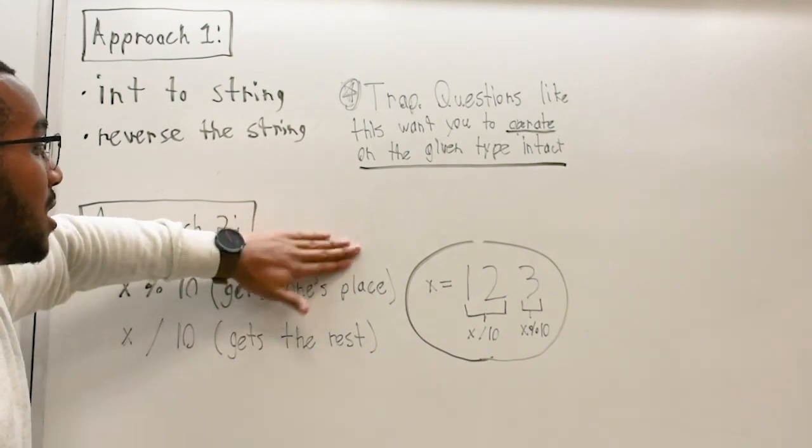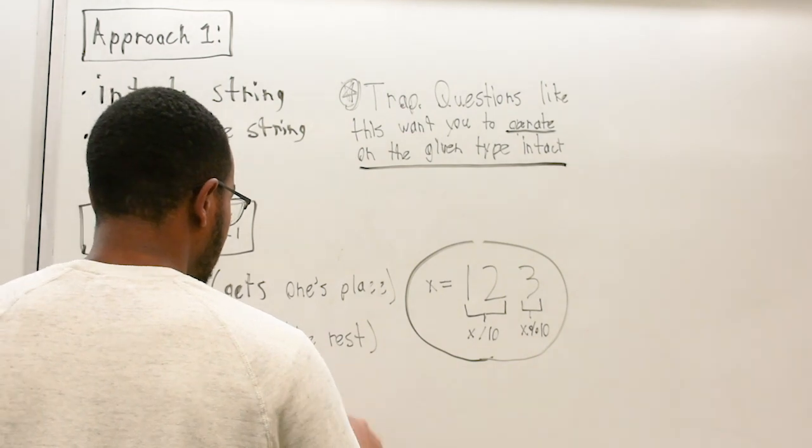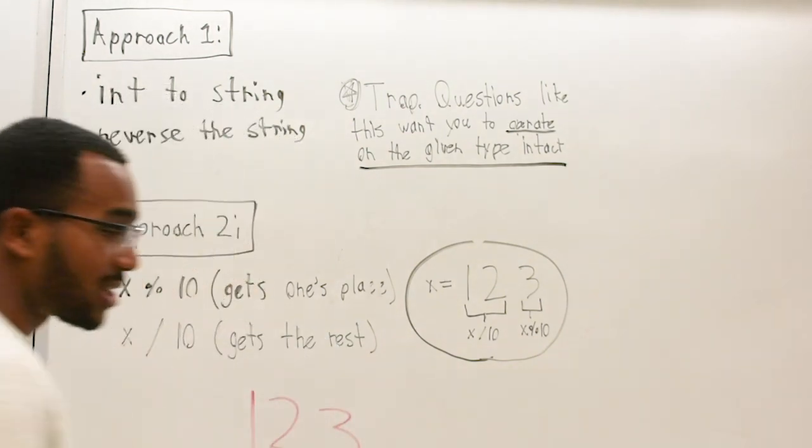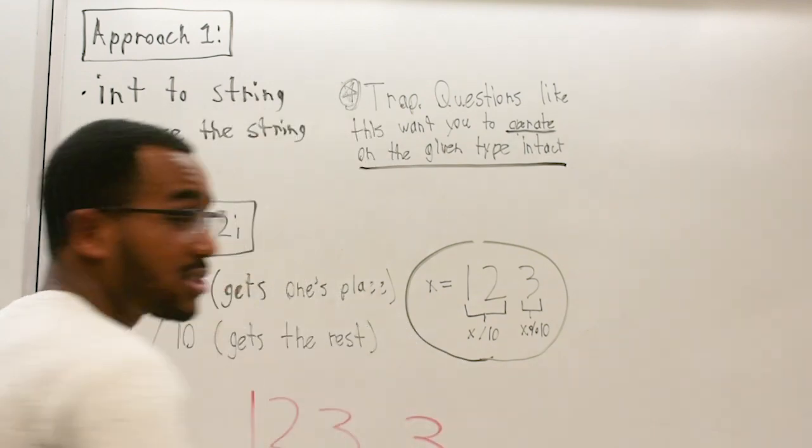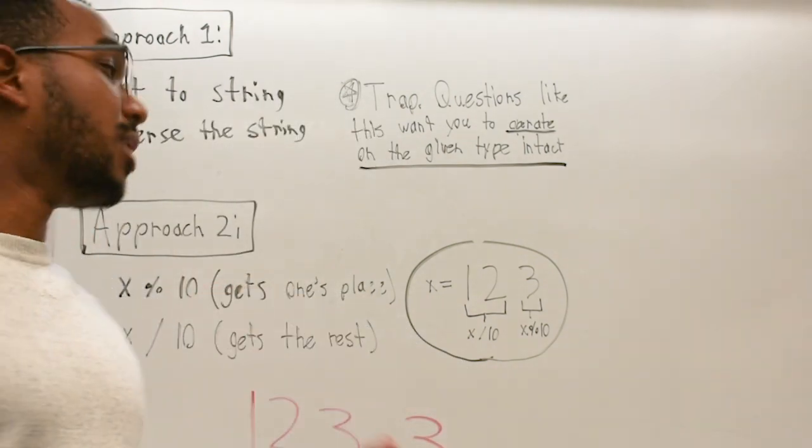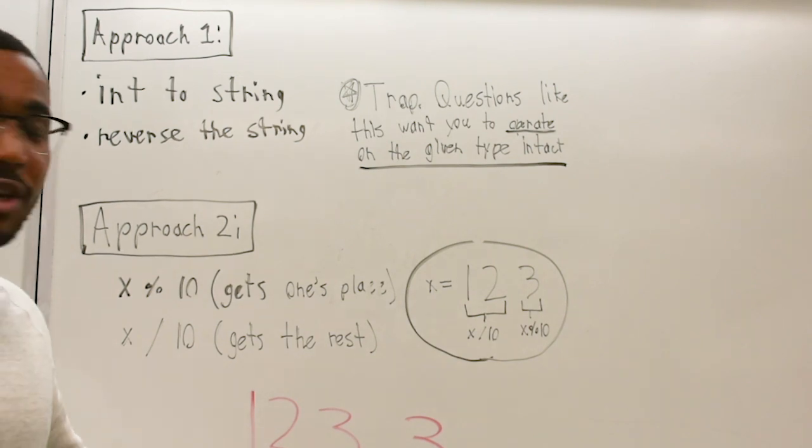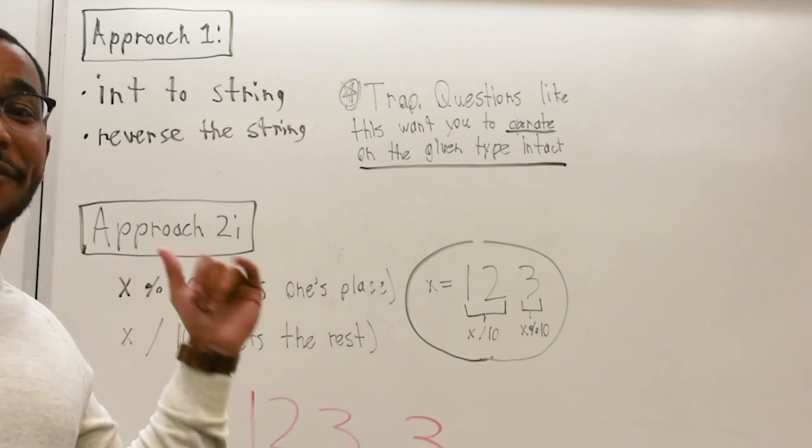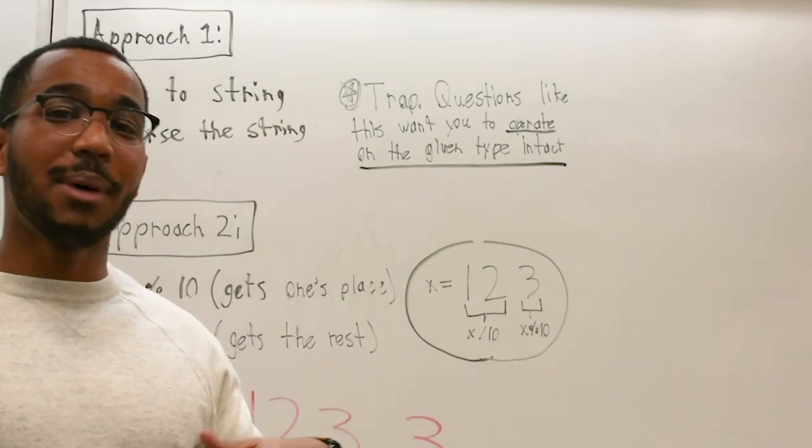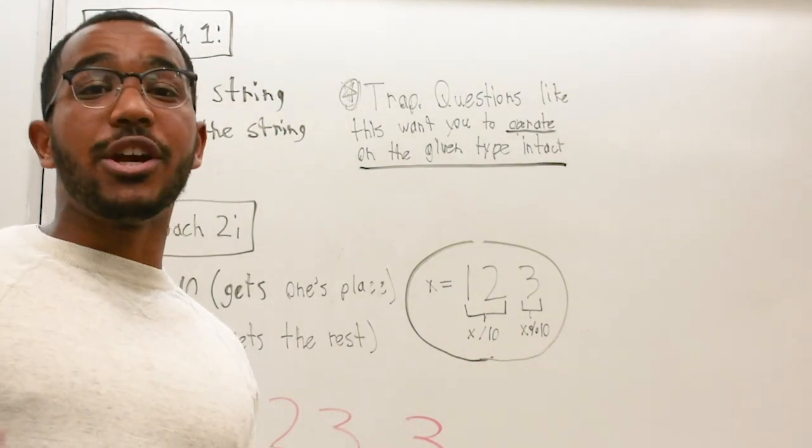So in this case, for the example 123, it would be three. So we would have 123 and we'd grab this guy and then we would place him as the first digit of our new number. And now what we need to do is we need to remove him from the original number. So how do we do that? Like I was saying, so for this, we can do X divided by 10. X dividing by 10 removes that last digit on a number.